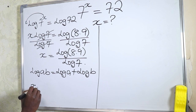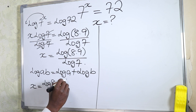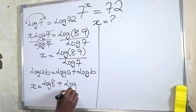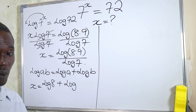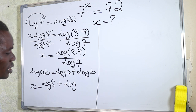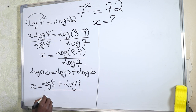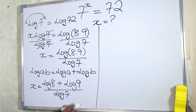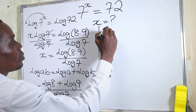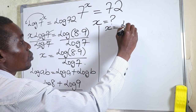So if we apply it here, we'll have x equal to log of a plus log of b. So log of 8 plus log of 9. Now 9 can be written as 3 squared, and 8 can be reduced accordingly — all divided by log of 7.